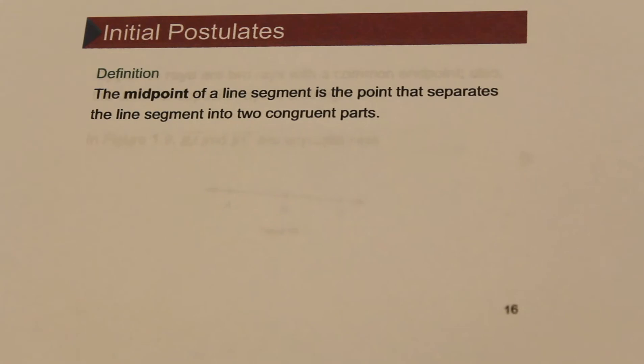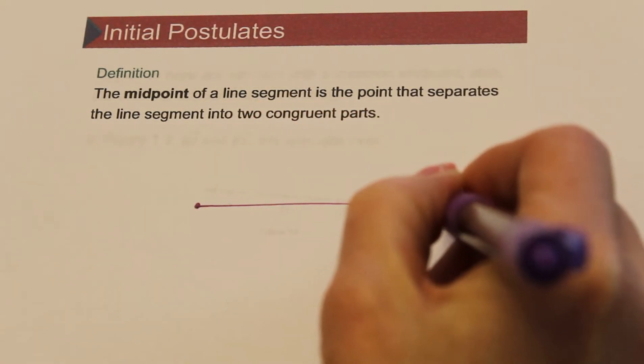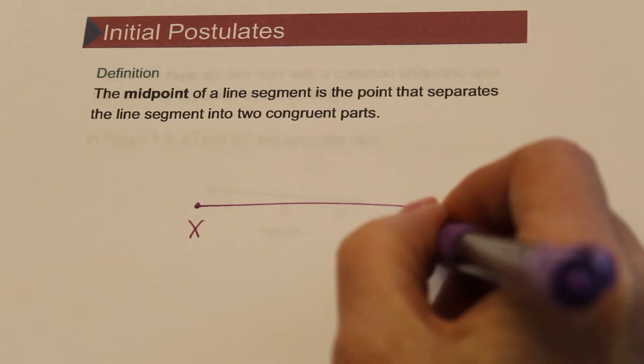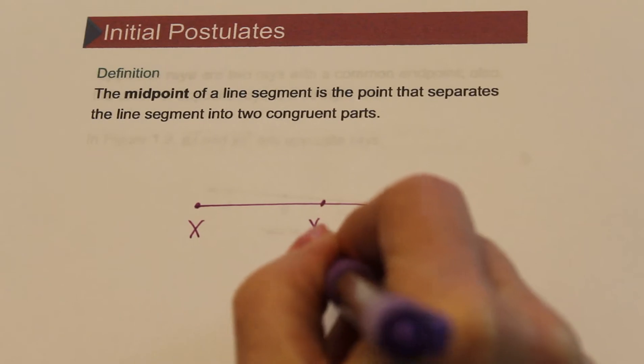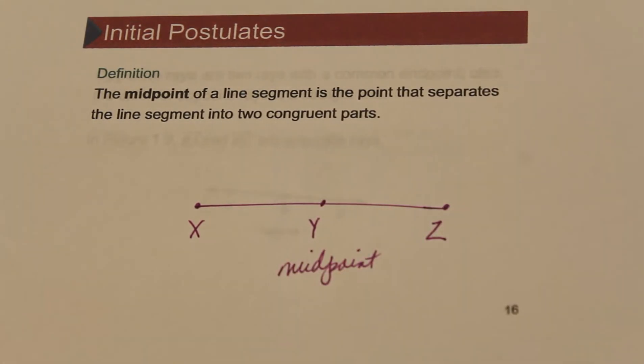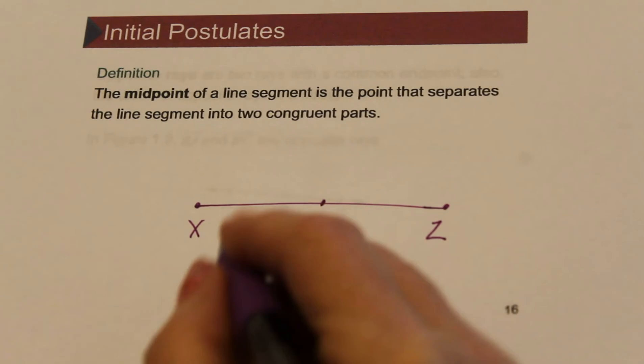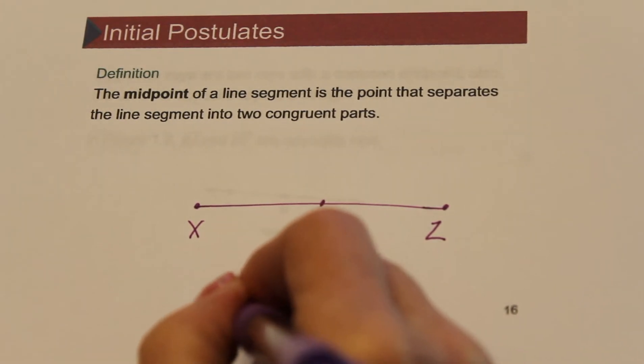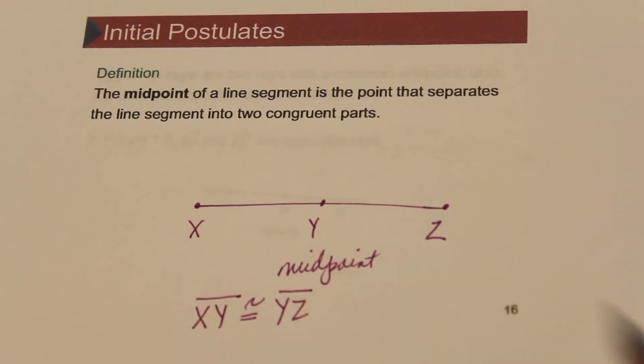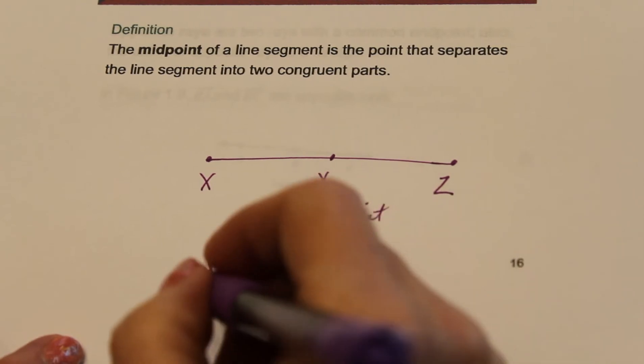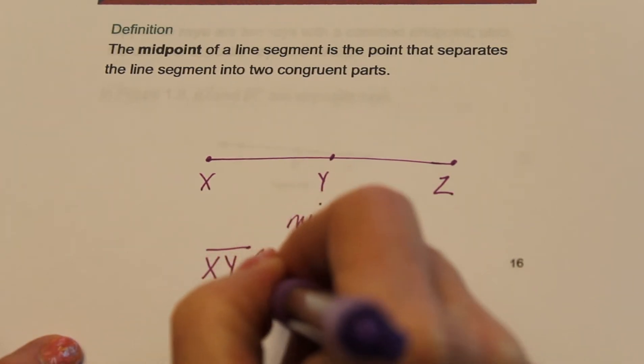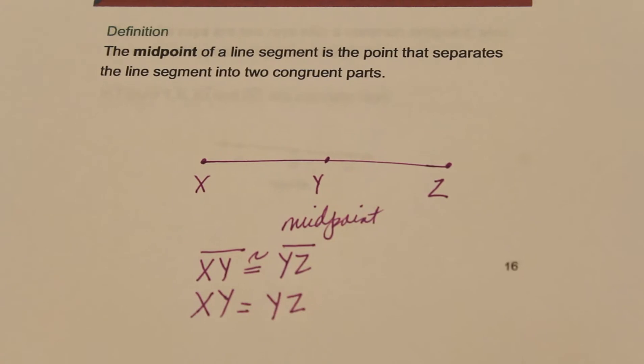And here's our definition of midpoint. The midpoint of a line segment is the point that separates the segment into two congruent parts. So if here's segment XZ and I say that point Y is the midpoint, by definition that means XY is congruent with YZ, which would also mean the length of XY equals the length of YZ.